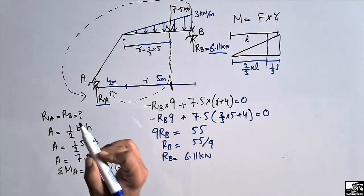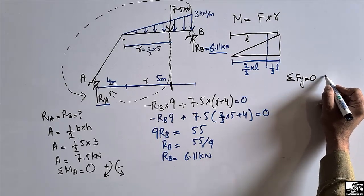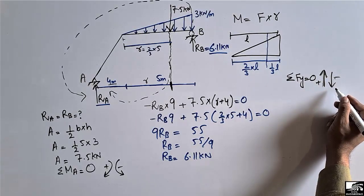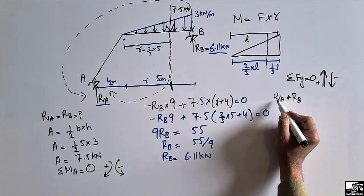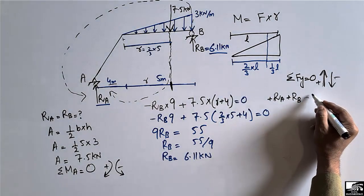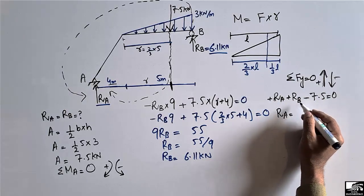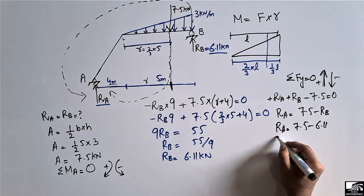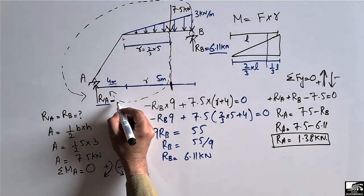Now to find R_A, we use the vertical equilibrium equation: sum of vertical forces equals zero. Taking upward forces as positive and downward forces as negative: R_A + R_B − 7.5 = 0. Since R_B = 6.11 kN, we get R_A = 7.5 − 6.11 = 1.39 kN. So the support reaction at point A is R_A ≈ 1.38 kN.